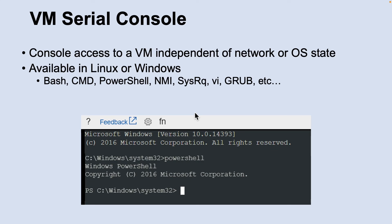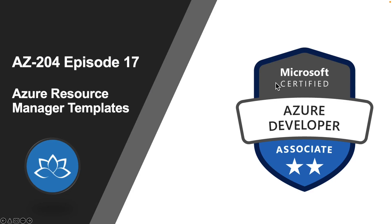The last topic in this lesson is the Virtual Machine Serial Console. The Serial Console in the Azure Portal provides access to a text-based console for virtual machines. This serial connection connects to the TTYS0 serial port for Linux virtual machines and the COM1 serial port for Windows virtual machines. The Serial Console provides access to the VM independent of the network or operating system state and can only be accessed using the Azure Portal. That concludes this lesson. In the next lesson, we are going to learn about Azure Resource Manager templates.